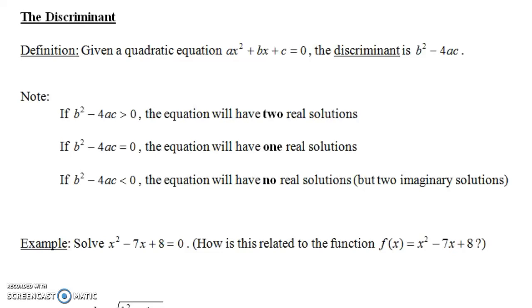In this video, we're going to talk about the discriminant of a quadratic equation. Given a quadratic equation of the form ax² + bx + c = 0, the discriminant is defined to be the number b² - 4ac.